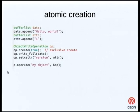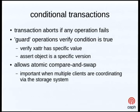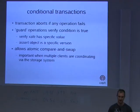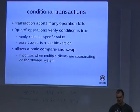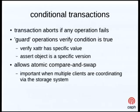You can also have transactions that are conditional. You can have steps in your transaction that, if they fail, abort the whole thing. Typically the strategy is to create guard operations early on that assert some condition is true — for example, they might verify that an extended attribute has a particular value, or that the object version is some particular version. This means you can do the equivalent of atomic compare-and-swap operations from the client's perspective, enforced by the storage system. You can have lots of clients in your system coordinating implicitly via the storage system without needing a separate locking or coordination layer.